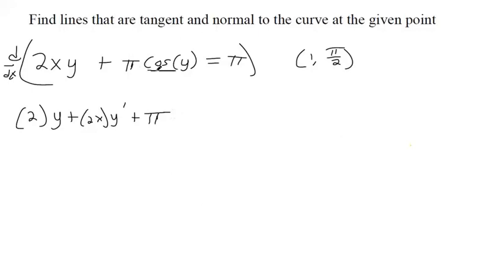And now here's the chain rule. The derivative of the outermost function is negative sine. And then we multiply that by the derivative of the innermost function. The derivative of y with respect to x is y prime. And then the derivative of pi is just 0.